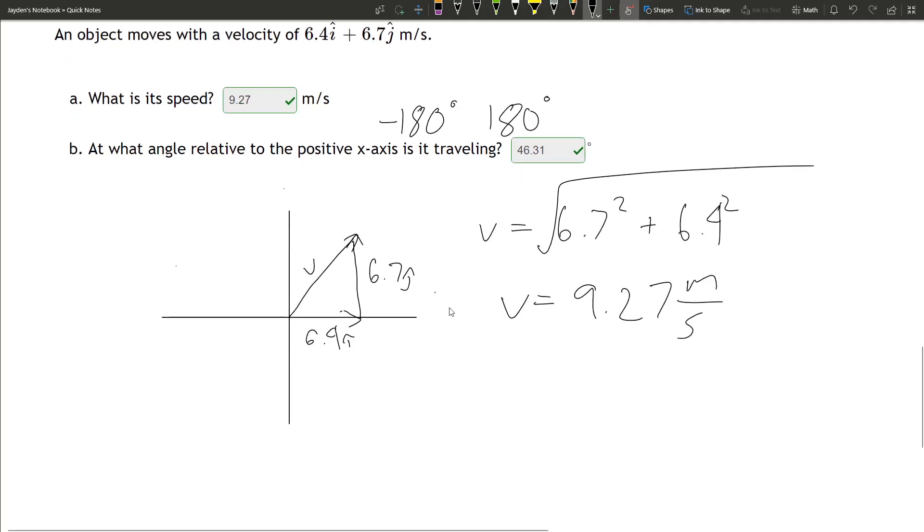Now we have to find the degrees. Again, we have x and y, so tangent theta is equal to 6.7 over 6.4, I mean meters per second.